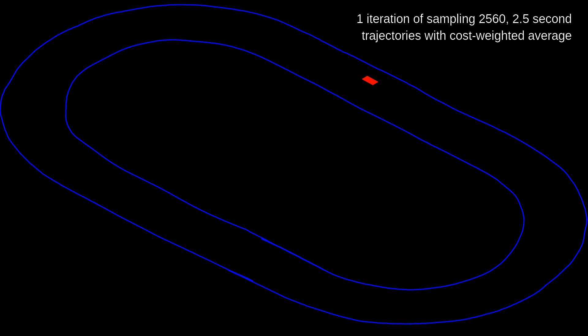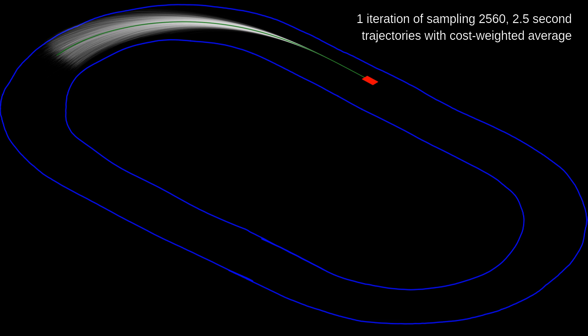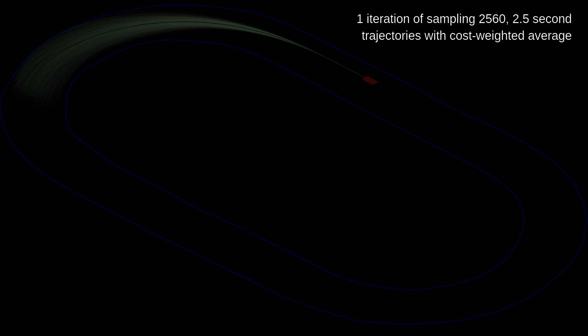Each optimization iteration starts with a nominal control sequence and the current state estimate. Then, 2,560 two-and-a-half-second long trajectories are sampled by applying random perturbations to the nominal controls. The nominal trajectory is shown in green, and the sample trajectories are shown in white. The new control sequence is computed as the cost-weighted average of the sample trajectories. One time step of controls are applied, then optimization is repeated.